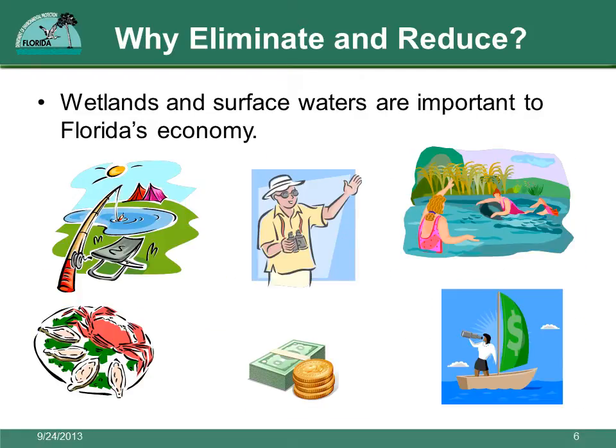Florida has a heavily tourism-based economy because everybody wants to see our beautiful wetlands and waters. Many of the tax dollars used to provide valuable services to Florida residents, such as education and roads, come from money that tourists spend on hotels, goods, services, and entertainment. Wetlands protect Florida's water quality. Tourists come here to relax near our clean water and vibrant wildlife. Protecting wetlands is a good investment for the state of Florida.